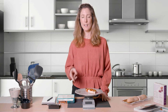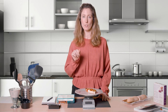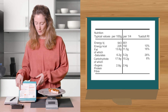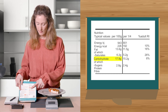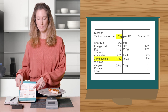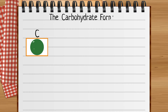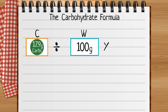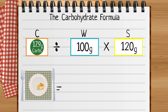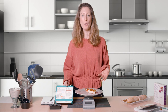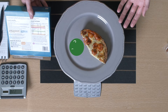To do the calculation I need two more pieces of information — I'm going to use the food label. I need the carbohydrate and the weight. The calculation is C divided by W, multiplied by S, which gives me the carbohydrate in my serving of food. From the calculation, the carbohydrate in my quiche is 22 grams.